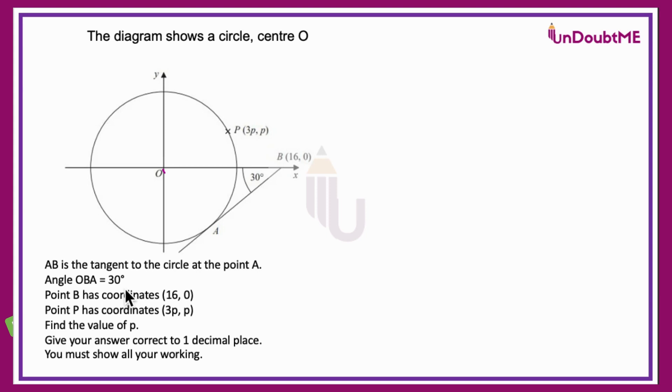Since AB is a tangent, I will use the circle theorem and draw a line which will be perpendicular to AB and that would be the radius of the circle. The 30 degrees angle is also given and OB length as per the coordinate is 16.